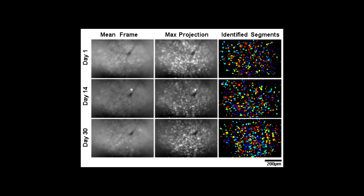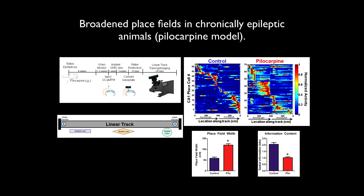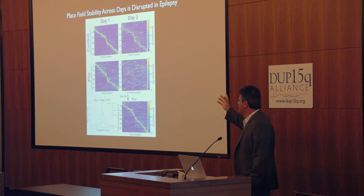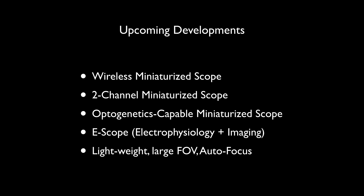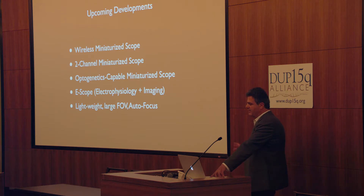You can look at activity across multiple days — even a month — looking at the same cells. We've used this not in the DUP15Q model but in a model of epilepsy — the pilocarpine model — to look at how place is coded in the hippocampus. In this model, the animals have a prolonged seizure and then spontaneous seizures as they grow older. The place fields in these animals are much broader, and importantly, the stability of these place fields across days is completely gone in the epileptic animal. This could be one of the main reasons that cognition is changed in these animals.